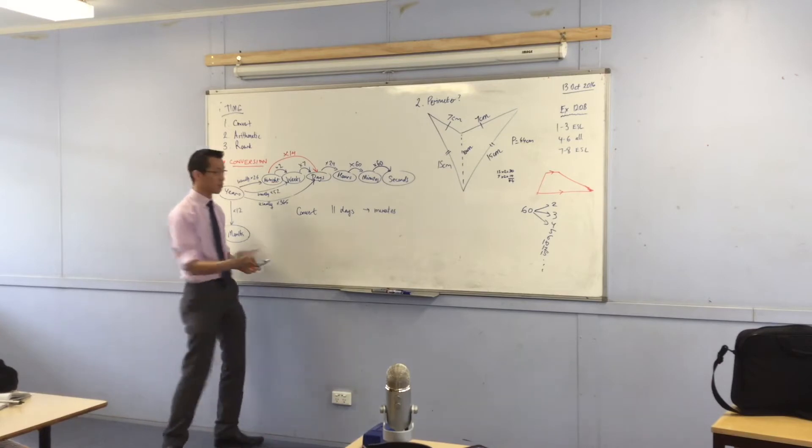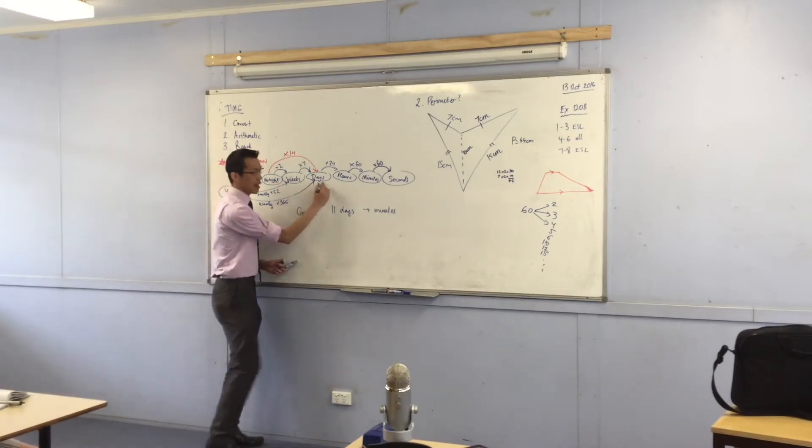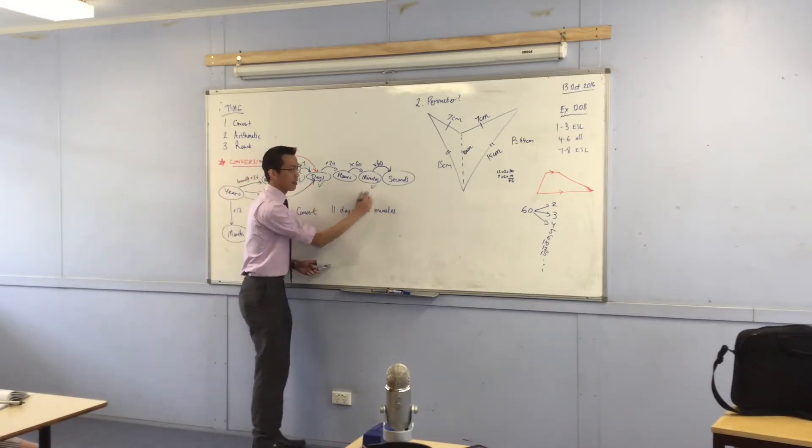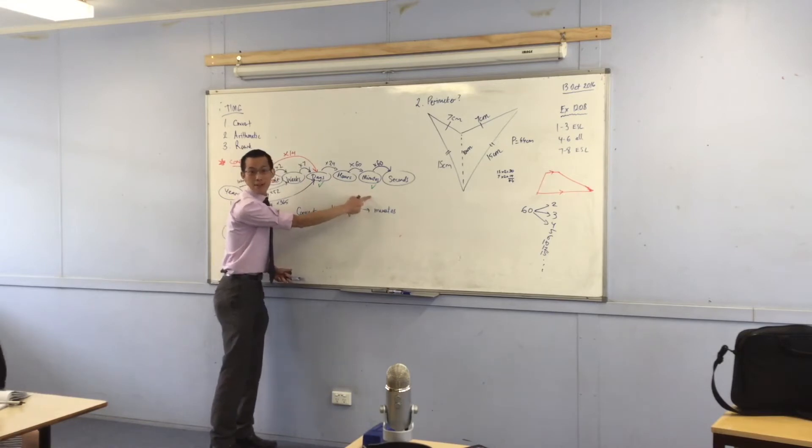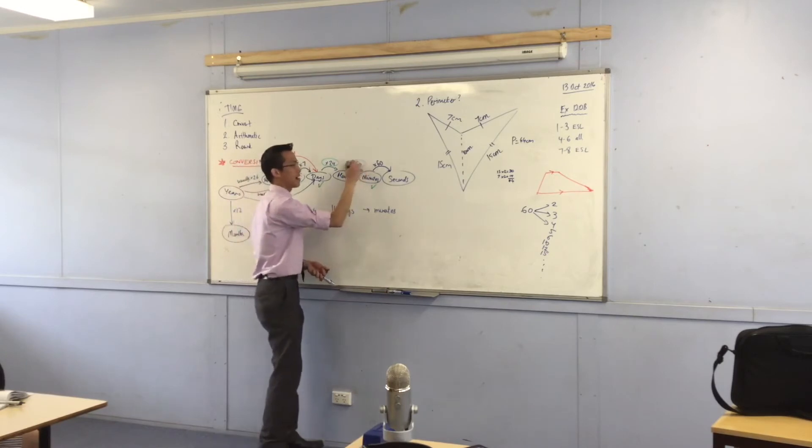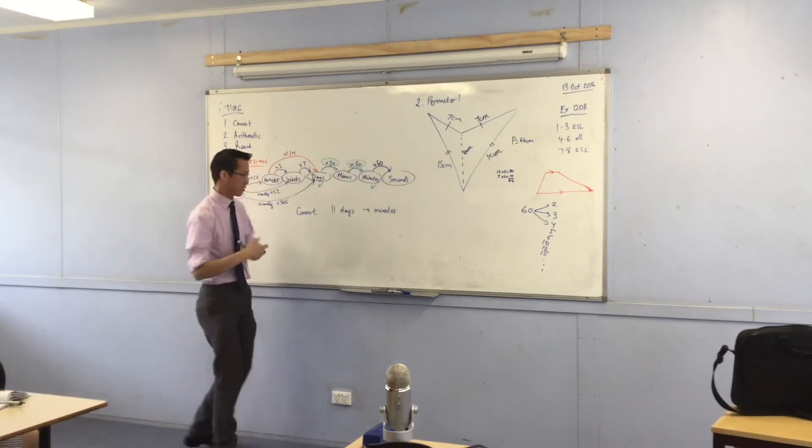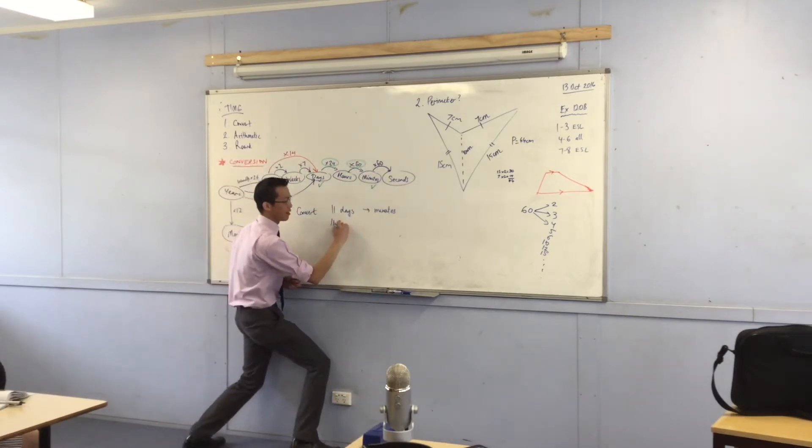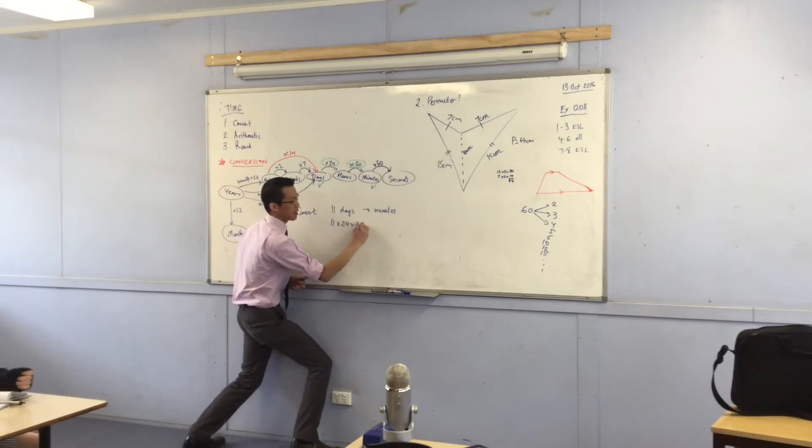Which two units are you using? Days and minutes. So to get from days to minutes, I have to multiply by 24 and then I have to multiply by 60. Does that make sense? So now I can write this down. 11 times 24 times 60.